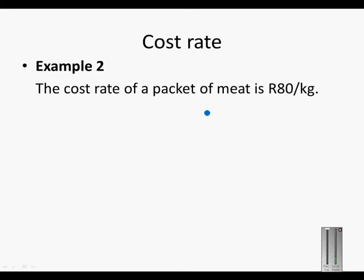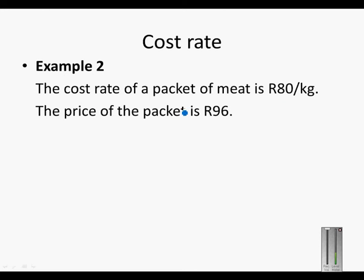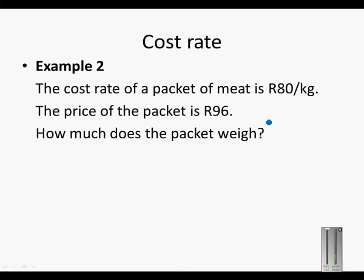Cost rate example 2: The cost rate of a packet of meat is 80 Rand per kilogram. The price is 96 Rand. So how much does this packet weigh? Again, if we consider the units...